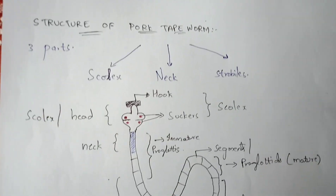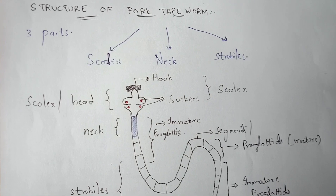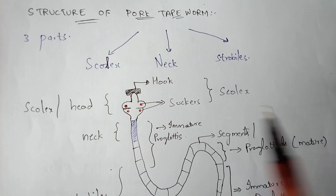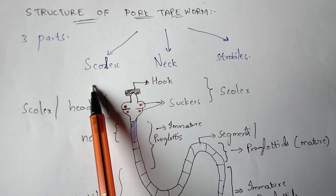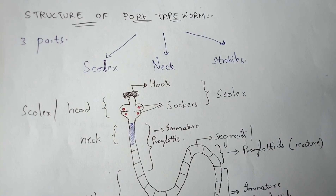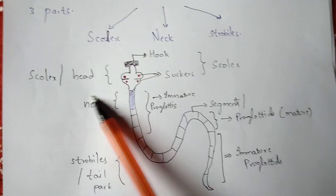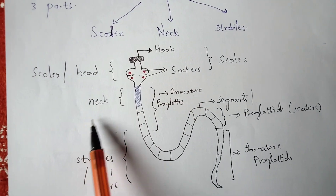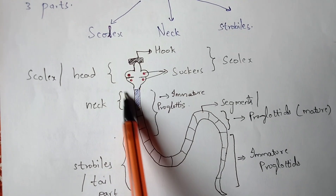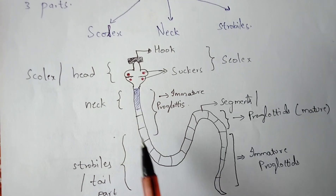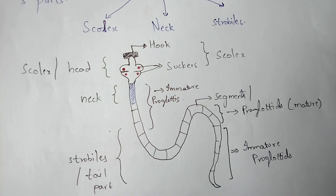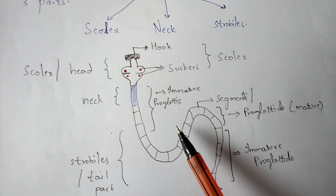The structure of the pork tapeworm is mainly divided into three regions: scolex, neck, and strobila. These are the three parts present in the pork tapeworm. The scolex is the head region, the shaded part is the neck region, and the whole remaining region is the strobila, which is the tail part.